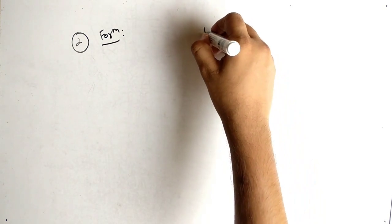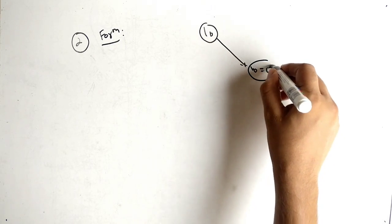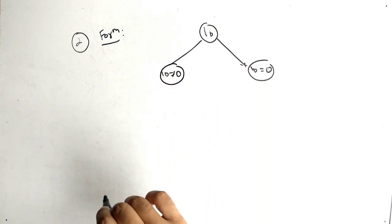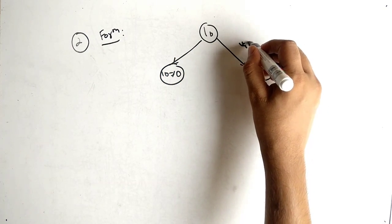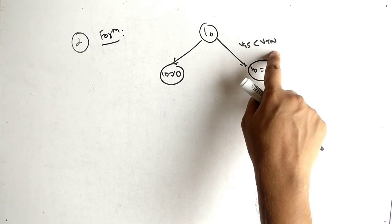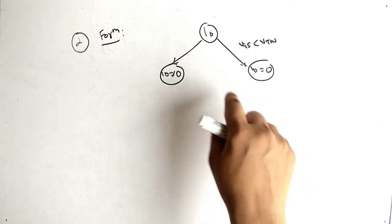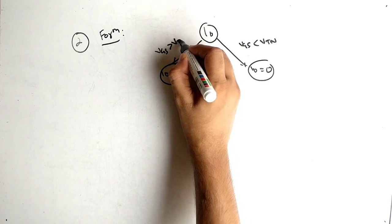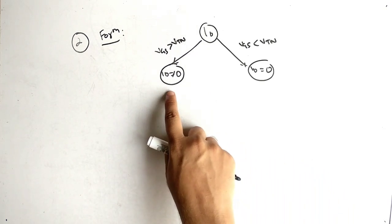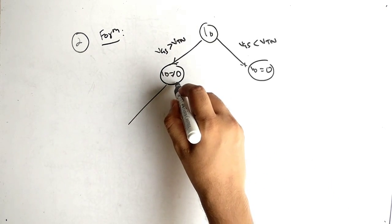To understand the formula, first we understand the flow. ID can be equal to 0 or not equal to 0. When ID equals 0, VGS is less than VTN — the input voltage has not crossed the threshold voltage, so current is not flowing. When VGS is greater than VTN, it has crossed the threshold voltage and the circuit is active, meaning current is flowing.